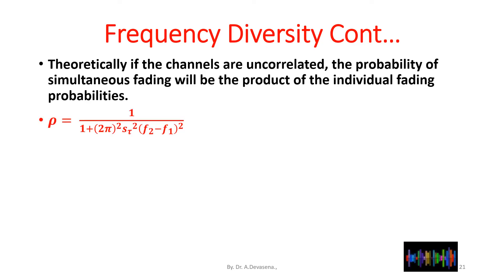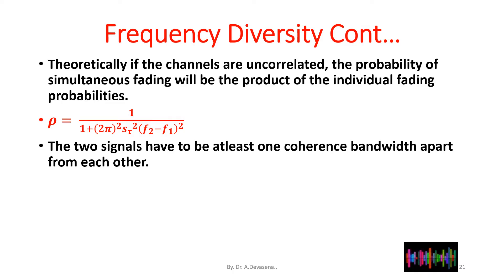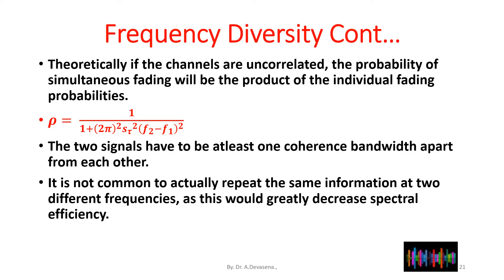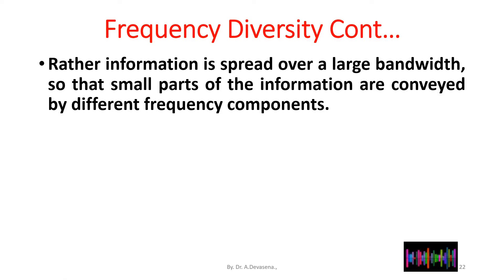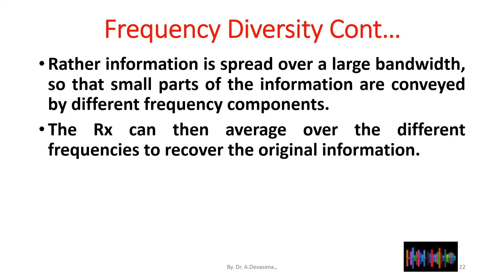The correlation is given by: ρ = 1 / (1 + (2π)² · σ_x² · τ² · (f2 − f1)²). The two signals have to be at least one coherence bandwidth apart from each other. Rather than repeating the same information at two different frequencies, information is spread over a large bandwidth so that small parts of the information are conveyed by different frequency components. The receiver can then average over the different frequencies to recover the original information.